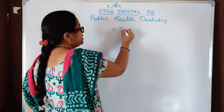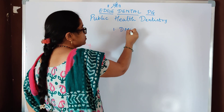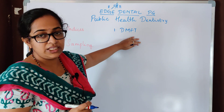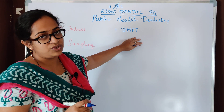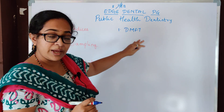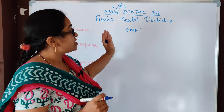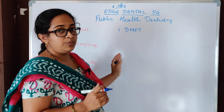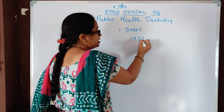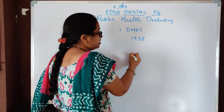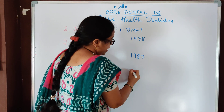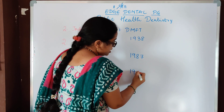DMFT is an index to be used only for permanent teeth — it is not for deciduous teeth. The first primary thing to remember is it was first given in 1938, then again modified in 1987 and 1997.